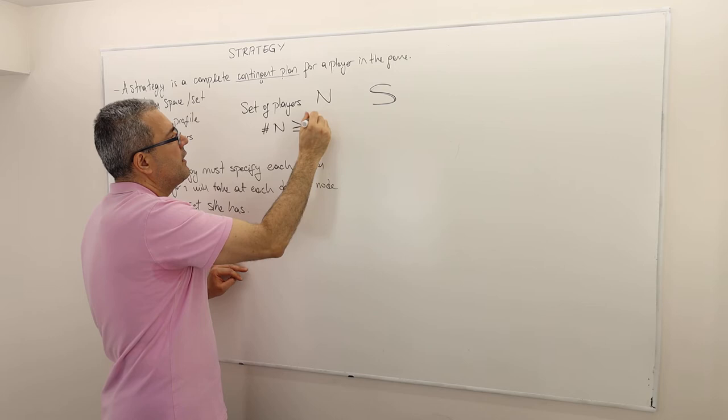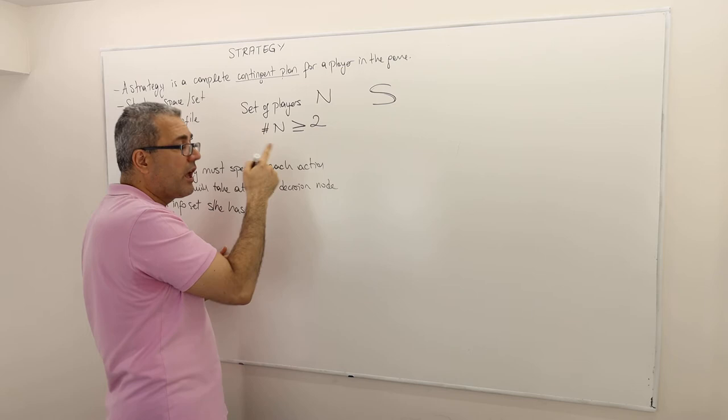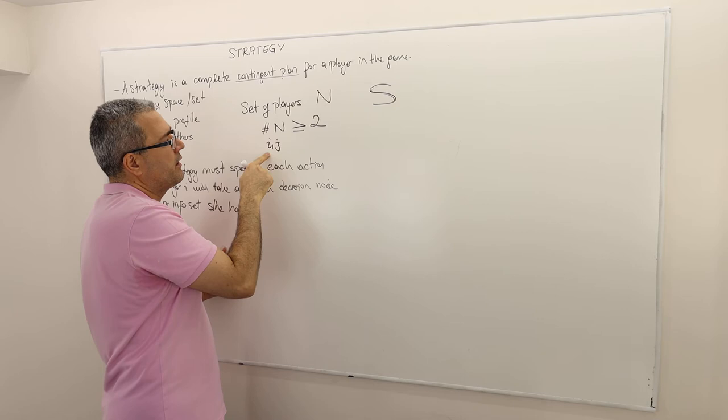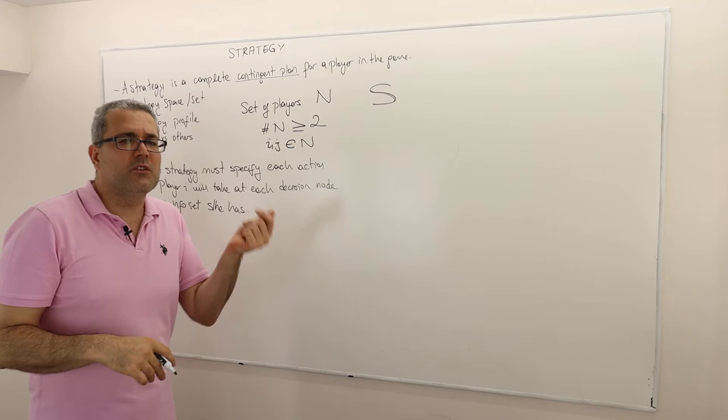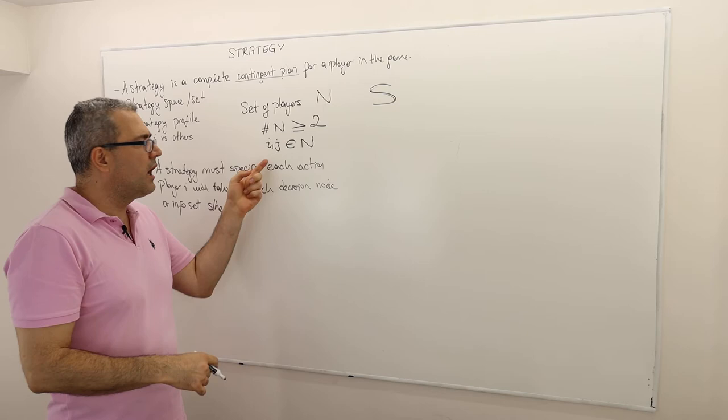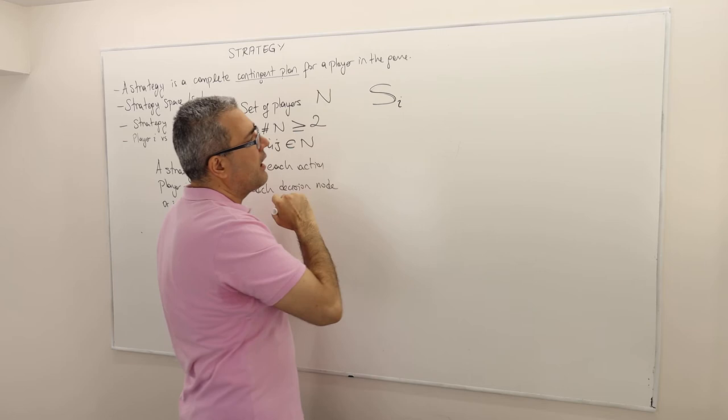So we usually denote it by N. So it's not the set of natural numbers, it's N, the set of players. And remember, we need at least two members in this set. So therefore, the number of elements in the set N has to be at least greater than or equal to two. And the players are going to be like i, j, player i, player j, which are element in N. So I'm going to call them, not Mr. Green, Mr. Brown. I'm going to call them player one, two, three, four, et cetera, or player i, j. Very well.